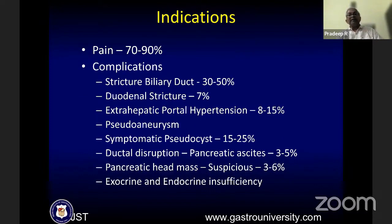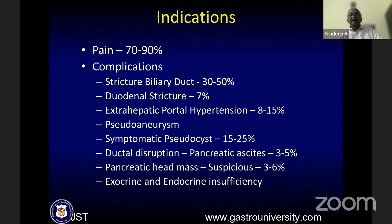Let us look at the complications which require intervention — medical, endoscopic, or surgical. The most important is pain, which occurs in 70 to 90% of patients, along with various complications like biliary ductal stricture, duodenal stricture, extrahepatic portal hypertension, pseudoaneurysm, pseudocyst, ductal disruption leading to pancreatic ascites, a doubtful pancreatic head mass to differentiate inflammatory from malignant, and exocrine-endocrine insufficiency which requires mainly medical treatment.